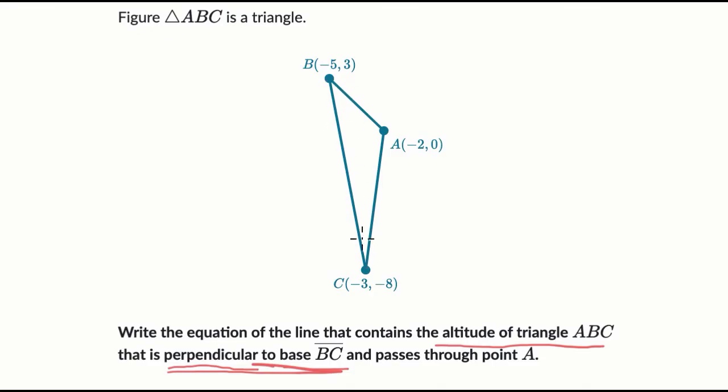So this is base BC here. So we want an altitude perpendicular to that that goes through point A. So it's going to go through this point. It's going to be perpendicular through that side. So this is the altitude. We want the equation of this line that contains this altitude. So I guess really we're finding the equation of this entire line here. So how do we do that?